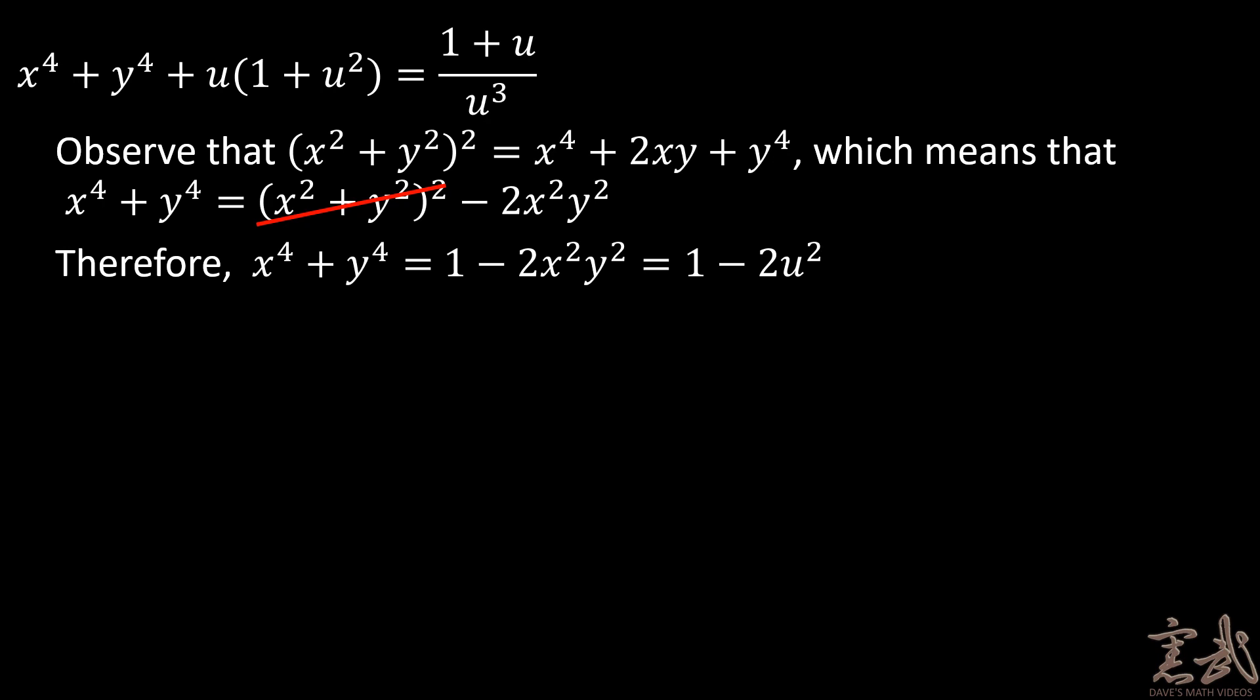Therefore, I have 1 minus 2u squared as the value of x to the fourth plus y to the fourth. I can plug this back in and now I have an expression that's completely in terms of u. 1 minus 2u squared plus u times the quantity 1 plus u squared is equal to 1 plus u over u cubed.